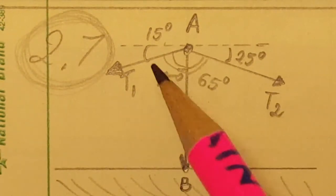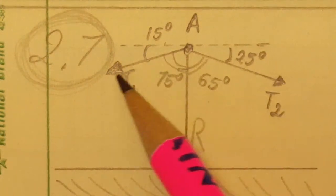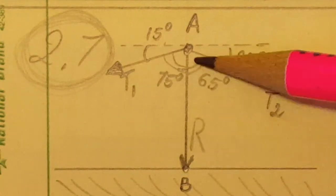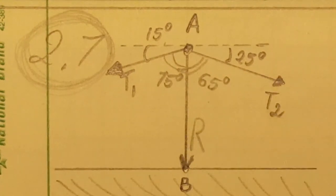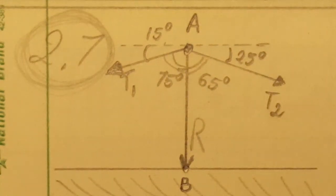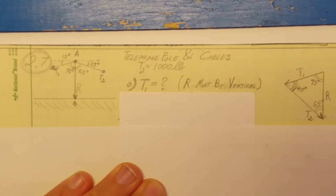We need to find T1 on the left hand side in a way that R, the resultant of the two forces, will be vertical. Then in the second part they want us to find the corresponding magnitude of this R.